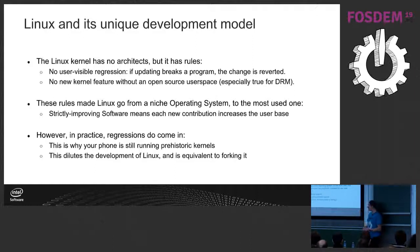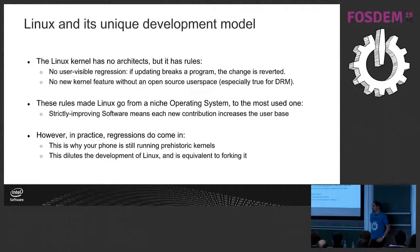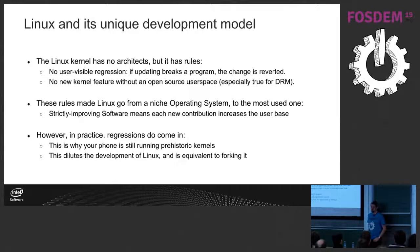This strictly improving every version — but in practice, regressions happen. That's why a lot of companies just freeze the kernel and say they won't update it because it's too scary. Their validation processes took months. That's why your phone is running terribly old kernels. This dilutes Linux development — if everyone could be working on the latest version, that would be beneficial.